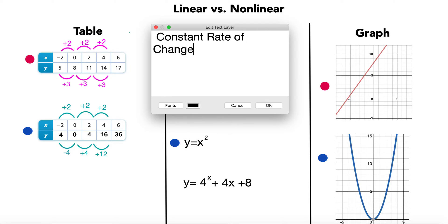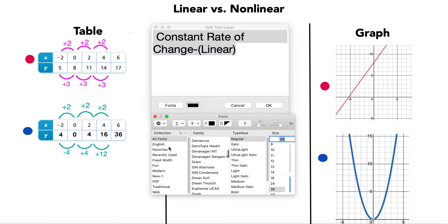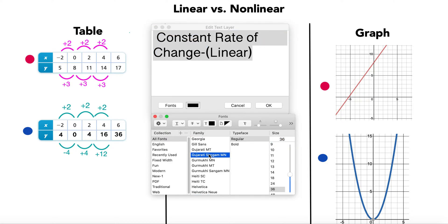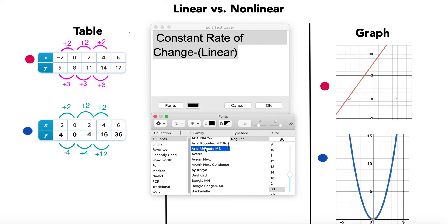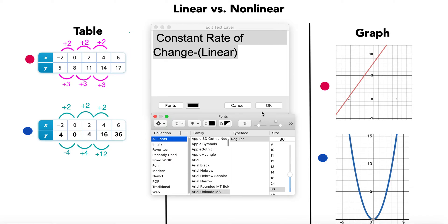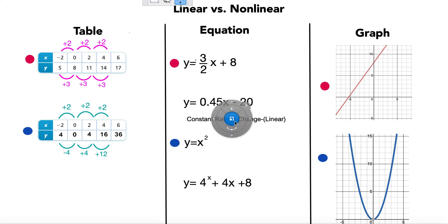And therefore, it is linear. You want to associate constant rate of change and linear. What I need you to remember is constant rate of change is linear.